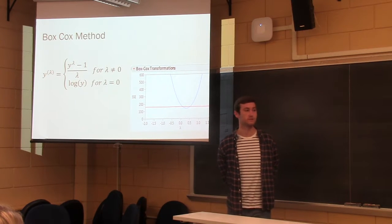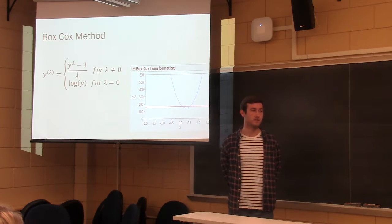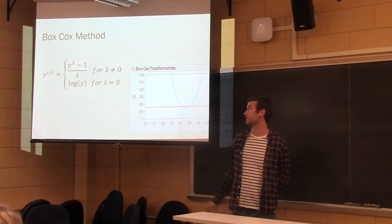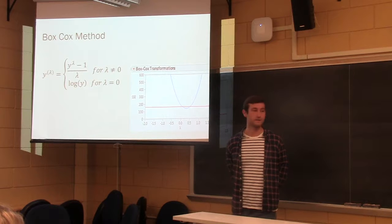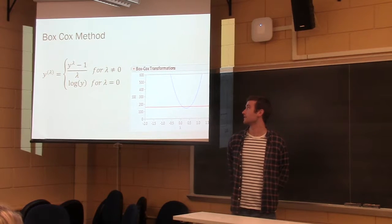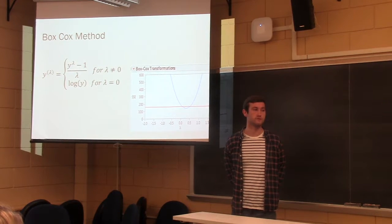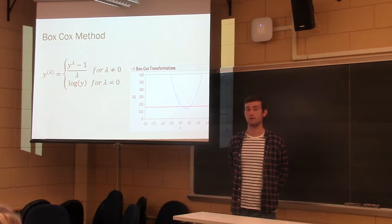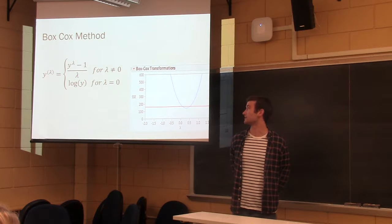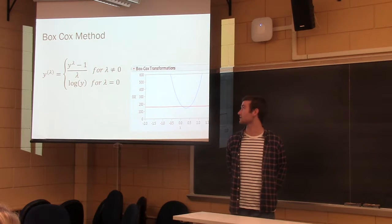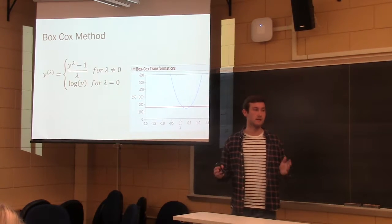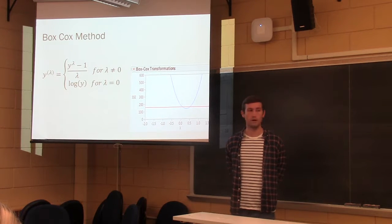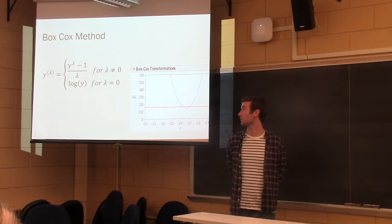So one way to automate transformations is using the Box-Cox method. Your machine will do this for you. The equation for that is y to the lambda transformation. For lambda not equal to zero, the transformation is y to lambda minus one over lambda. For lambda equaling zero, it's just a log transformation. So you run the Box-Cox method, and then it gives you a set of range to optimize lambda for the most normality of that variable.